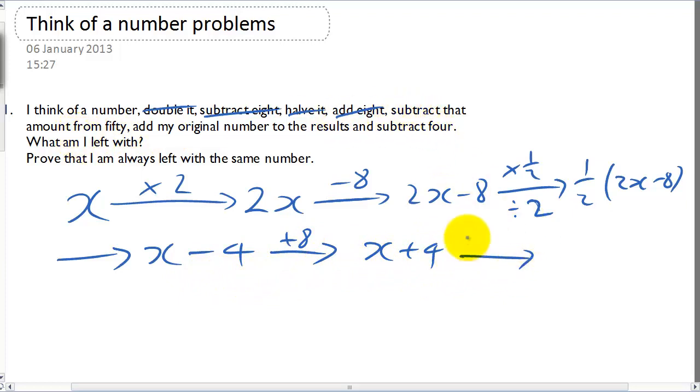So subtract this amount from 50. So I'm going to take this amount from 50. Take the 4 away from 50, that leaves you 46. Take the x from 50, you get minus x.